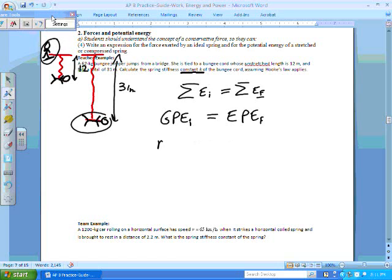So now that we've identified the forms of energy, let's apply the formulas. We know that mgh initial is going to equal the formula for elastic potential energy, which is 1 half kx squared.